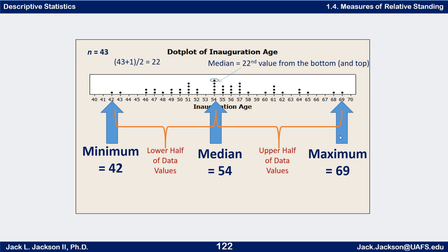So to summarize: minimum is 42, maximum is 69, and the median is 54. Hopefully everybody sees now how to compute the minimum, maximum, and the median.